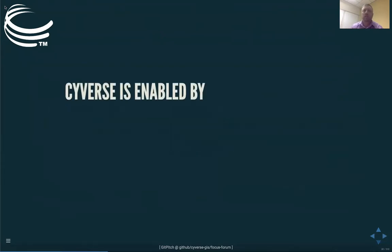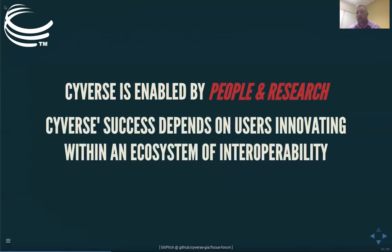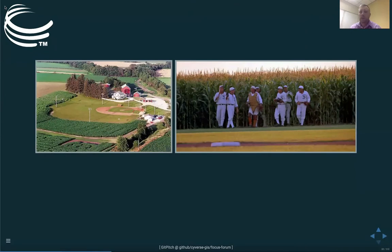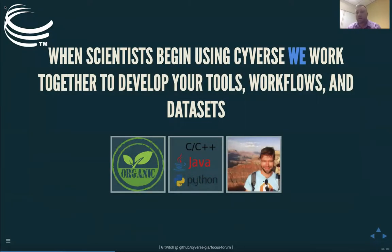CyVerse is enabled by people and the research they want to do. Our success depends upon new users coming into the system and developing new tools that other people can reuse. We're not building a field of dreams — cyber infrastructure out in the middle of nowhere expecting people to show up and use it. The way CyVerse works is that scientists come to us with a problem, we talk and develop a new workflow specific to their need, and likely that workflow is specific to many other users' needs as well. One of our developers calls himself an organic software farmer — his job is to help you develop a unique tool set that we can spread to the rest of the community.